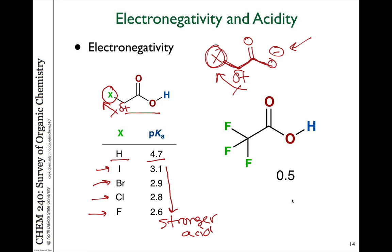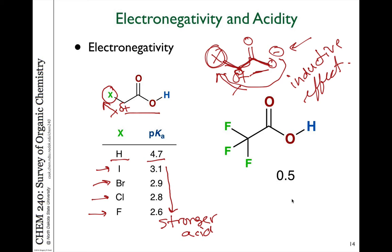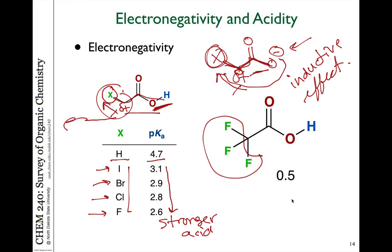When this stabilization happens through single bonds, we call it the inductive effect. The inductive effect is a polarization that stabilizes negative charge through sigma bonds — the negative charge isn't actually moving, but increased positive charge nearby helps stabilize it. This effect drops off dramatically with distance. Notice that putting three fluorines on gives almost three times the effect: one fluorine gives a pKa of 2.6, while three fluorines gives 0.5 — so electronegativity inductive effects are additive.